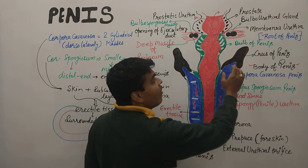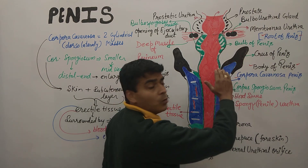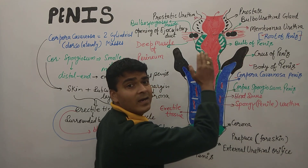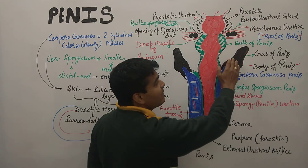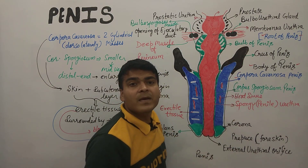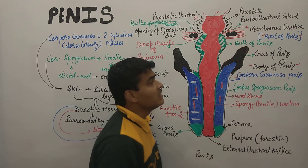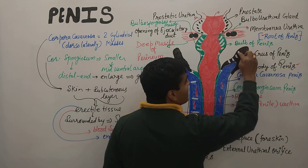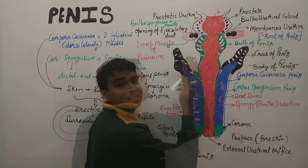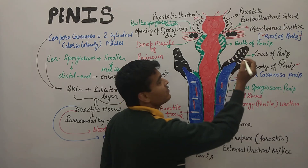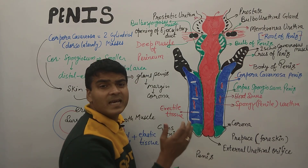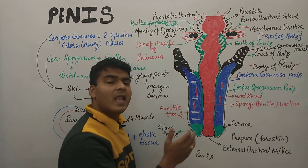The crus of the penis is a separated, tapered, or terminal structure at the superior aspect of the corpora cavernosa. On the crus of the penis, there are muscles known as the ischiocavernosus muscles. These ischiocavernosus muscles also help in ejaculation.